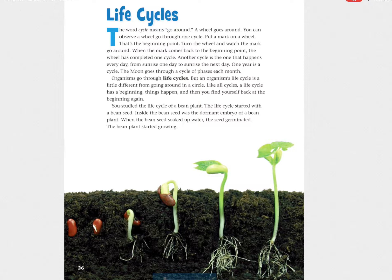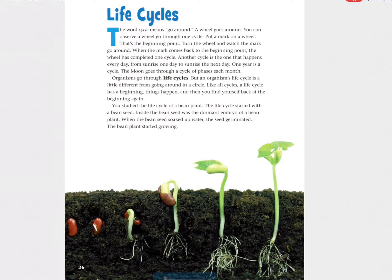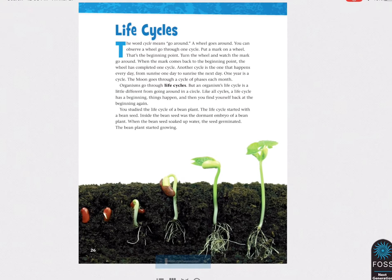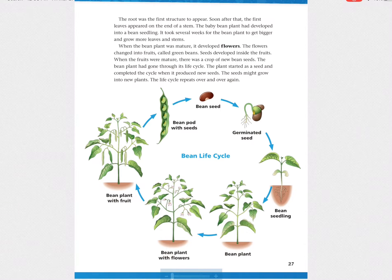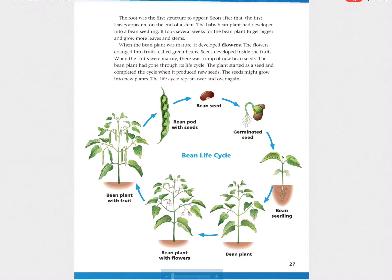You study the life cycle of a bean plant. The life cycle started with a bean seed. Inside the bean seed was the dormant embryo of a bean plant. Then the bean seed soaked up water, the seed germinated, and the plant started growing. The root was the first structure to appear. Soon after that, the first leaves appeared on the end of a stem. The baby bean plant had developed into a bean seedling.